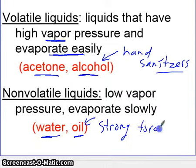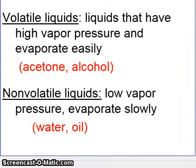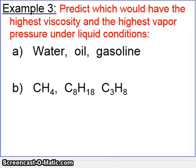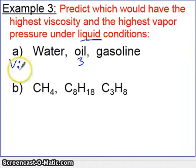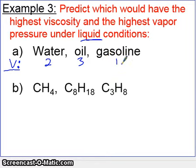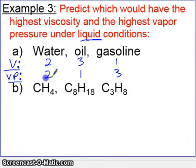In an example problem: predict which of water, oil, and gasoline has the highest viscosity and highest vapor pressure. Oil has the highest viscosity, water is in the middle, and gasoline has the lowest viscosity — gasoline pours very easily with very low resistance to flow. For vapor pressure, the order is reversed: gasoline has the highest vapor pressure because it evaporates so easily, oil has the lowest vapor pressure because it doesn't evaporate at all, and water is again in the middle.